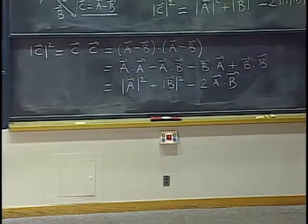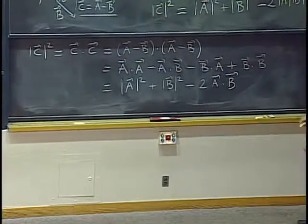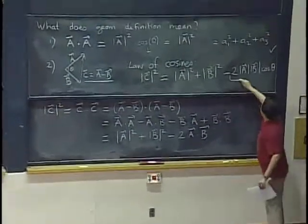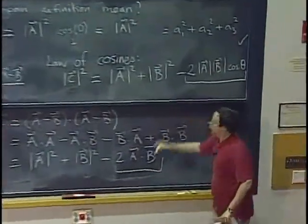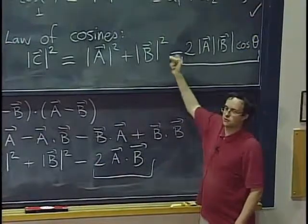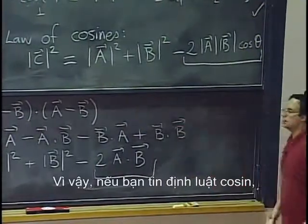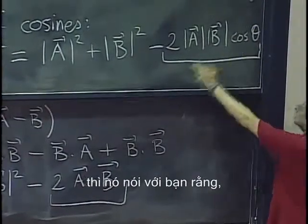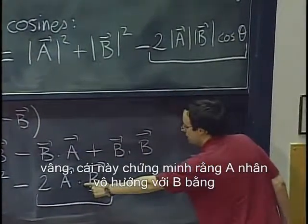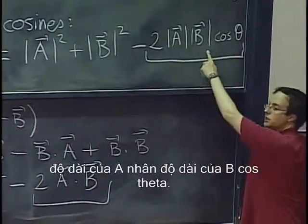So now let's compare these two formulas. Well, you see that this term is, I mean, this is the only difference between these two formulas for the length of c. So if you believe in the law of cosines, then it tells you that yes, this is a proof that a dot b equals length a length b cosine theta.